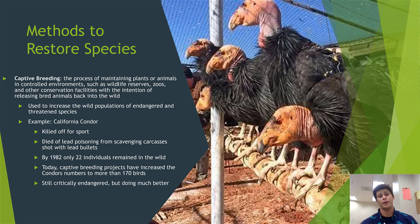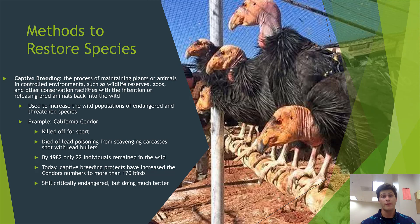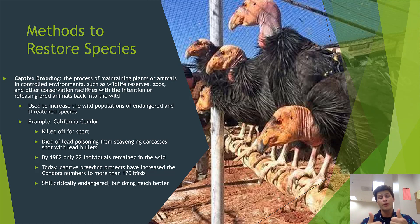For the remainder of the lecture, we're going to talk about methods to restore endangered or threatened species once their numbers have gotten too low — how can we bring those numbers up and return those populations to numbers which are safe or in the least concerned category? The first way is through captive breeding. Captive breeding is the process of maintaining plants and animals in very controlled environments like captivity — such as wildlife reserves, zoos, and other controlled conservation facilities — with the intention of releasing bred animals back into the wild to bring up the numbers of those populations in wild ecosystems.